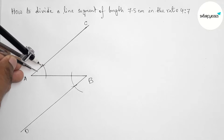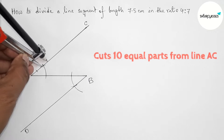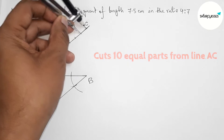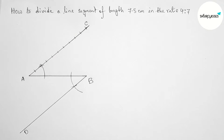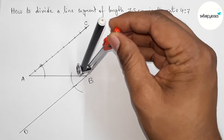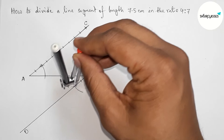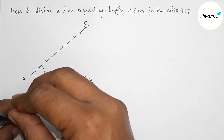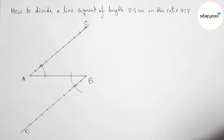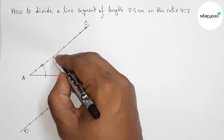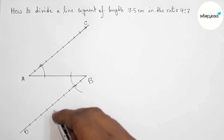Taking a length of approximately 0.9 centimeters with the compass. We have to cut 10 equal parts from line AC. By this method, cutting line AC into 10 equal parts. By the same method, cutting line BD into 10 equal parts with the same length — so both AC and BD are each divided into 10 equal parts.